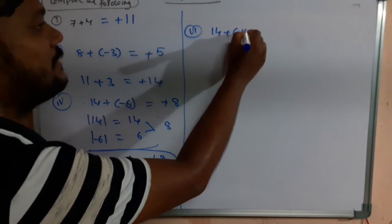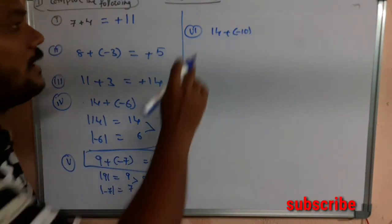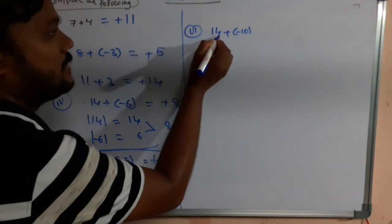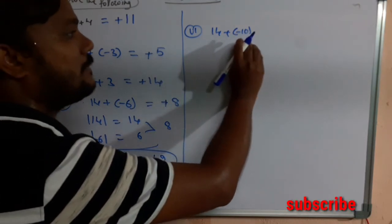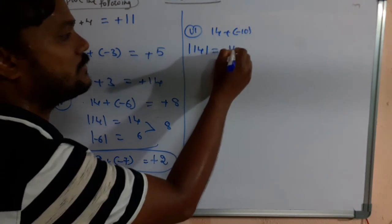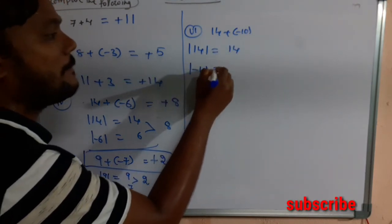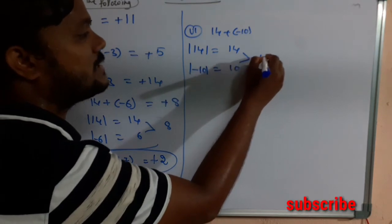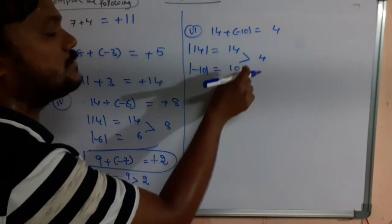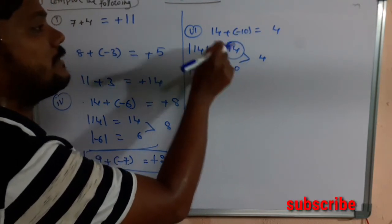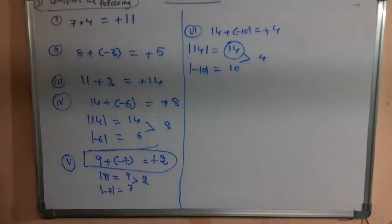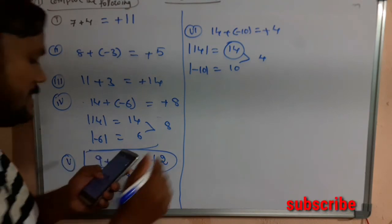The sixth question is 14 + (-10). These are unlike integers — 14 is positive and -10 is negative. Take the absolute values: 14 and 10. The difference is 4. Since 14 has the greater absolute value and is positive, the answer is +4.